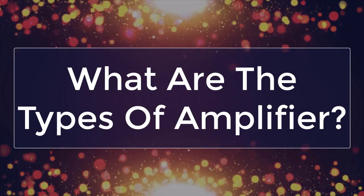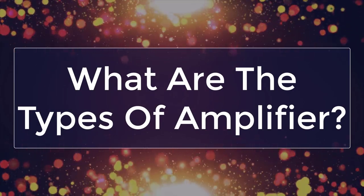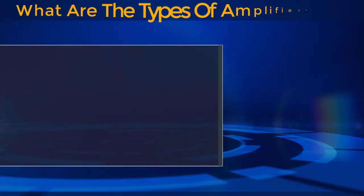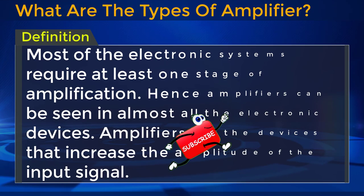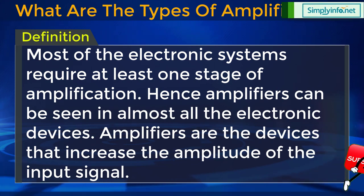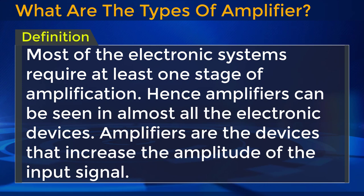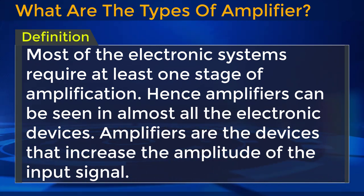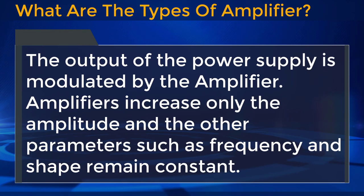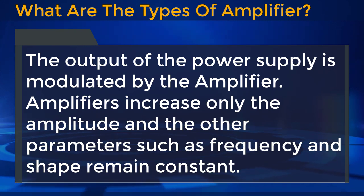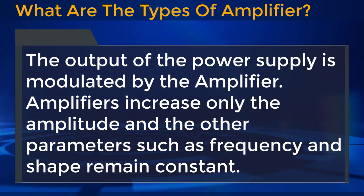What are the types of amplifiers? Most of the electronic systems require at least one stage of amplification. Hence, amplifiers can be seen in almost all electronic devices. Amplifiers are devices that increase the amplitude of the input signal. The output of the power supply is modulated by the amplifier. Amplifiers increase only the amplitude, and other parameters such as frequency and shape remain constant.